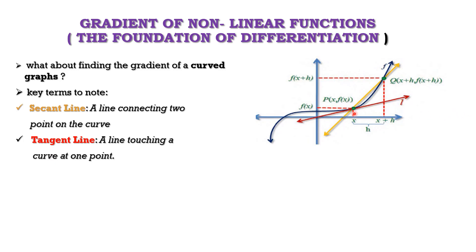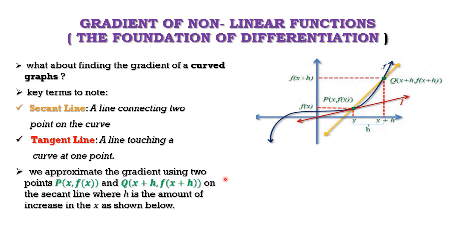The red line touching only one point on the curve is called the tangent line. We approximate the gradient using two points — P at (x, f(x)) and Q at (x + h, f(x + h)) — on the secant line, where h is the amount of increase added to the input variable x to create the new point x + h. So h increases the value of x to bring us to the new point Q.